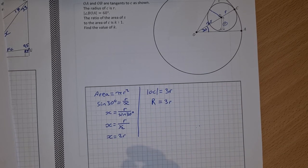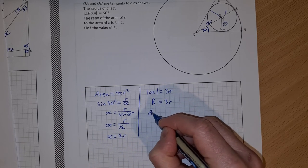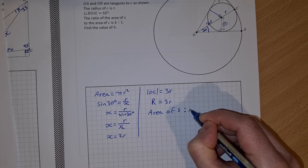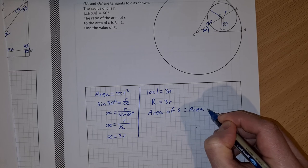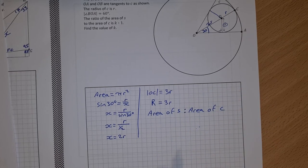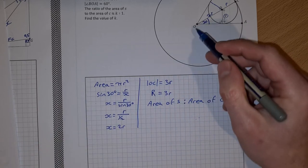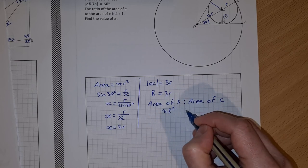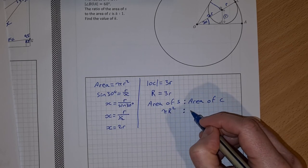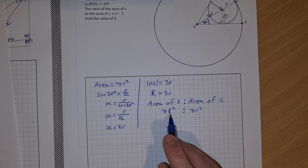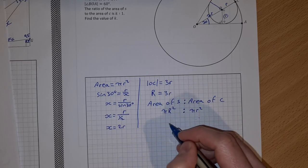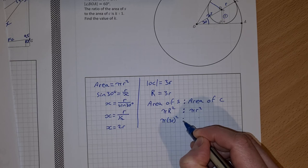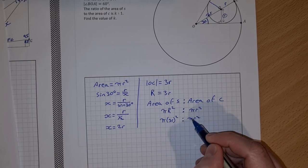Okay, so the big radius is equal to 3 times the small radius. Now I can do the area of S to the area of C. So the area of S is the big one, so that's pi R squared, and the area of C is pi r squared, small r. Now I know that big R is 3 small r, so that's pi times 3r squared is to pi r squared.